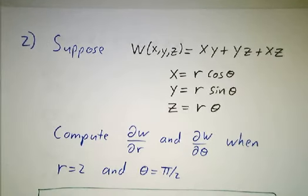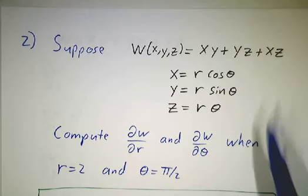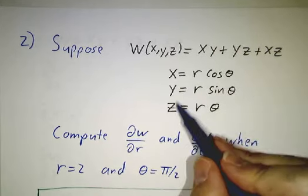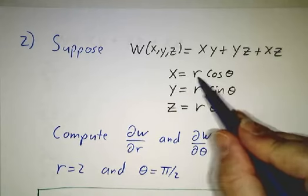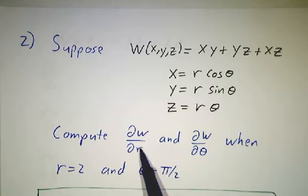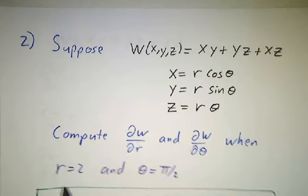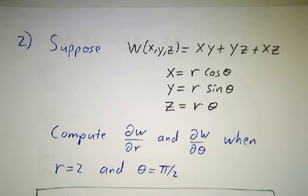Let's look at a function w(x, y, z) = xy + yz + xz. Suppose that x, y, and z are themselves functions of r and θ. We want to figure out ∂w/∂r and ∂w/∂θ at the point where r = 2 and θ = π/2.